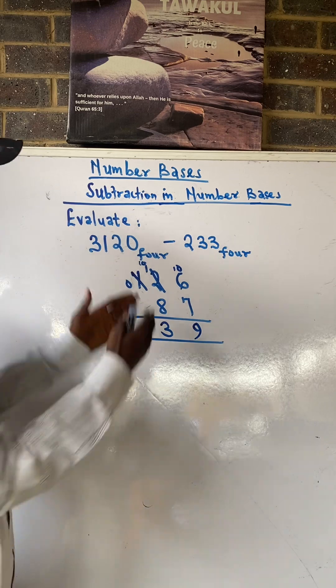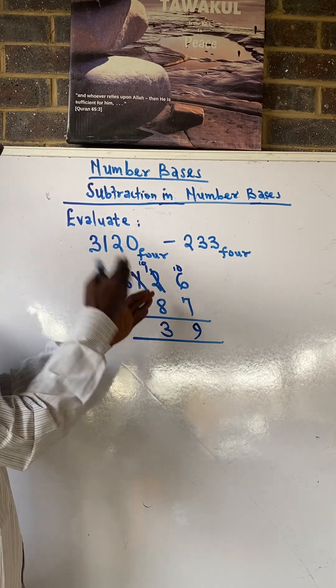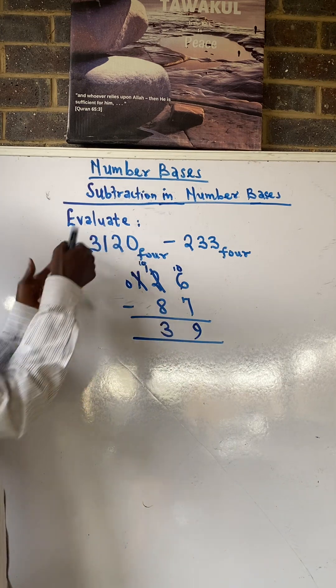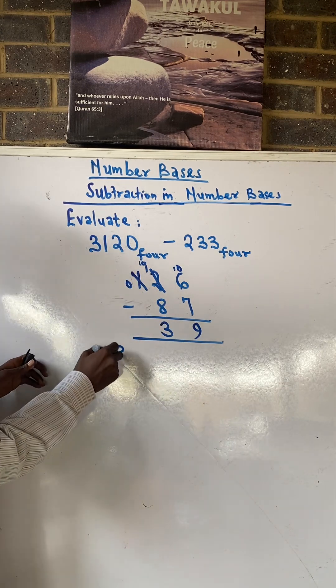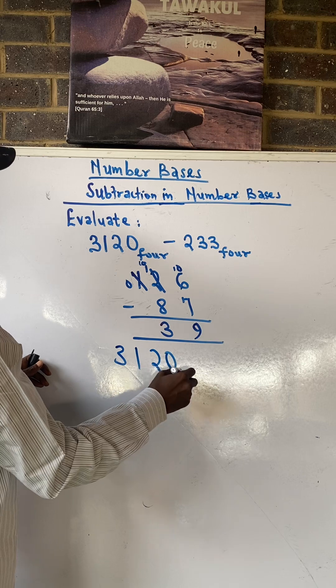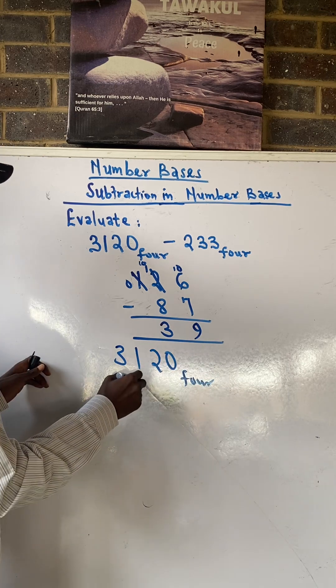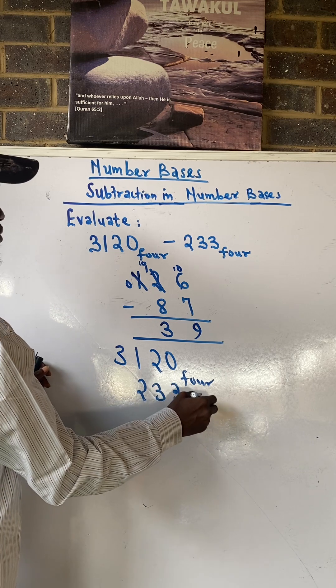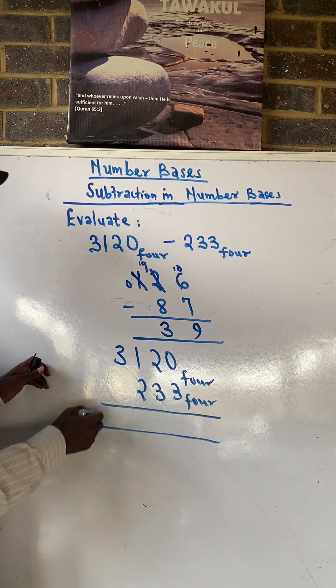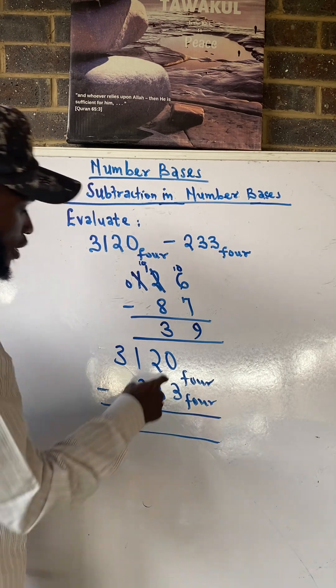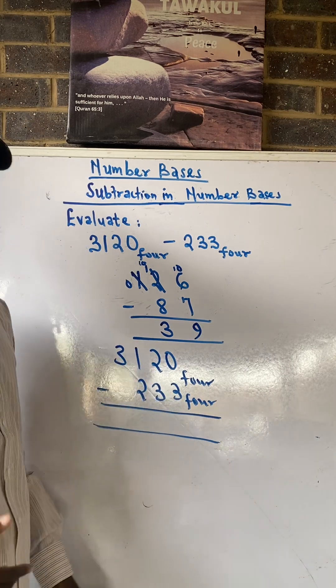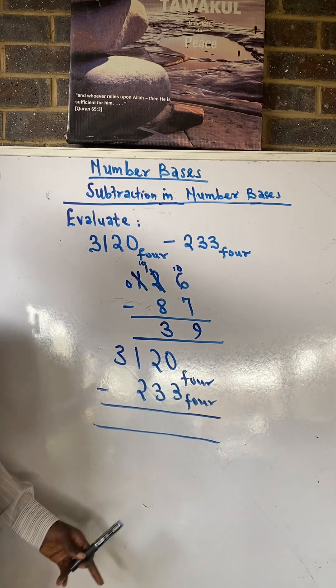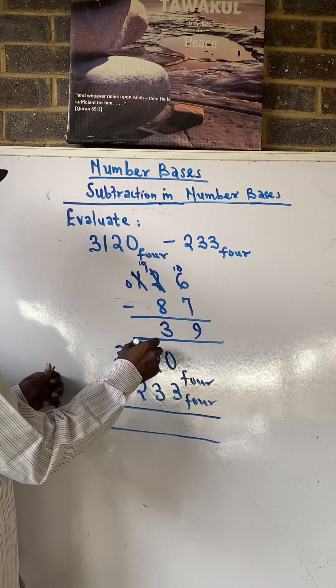That is how we used to do it, but this is the secret behind what we used to do. Now let's bring this sense back to this. So if we have 3120 base 4 minus 233 base 4, and we want to subtract this in base 4, first 0 minus 3 is impossible, we have to borrow.